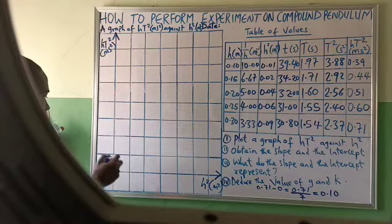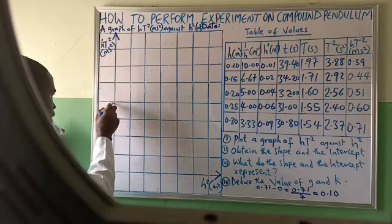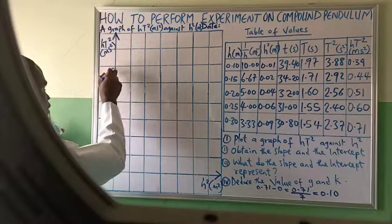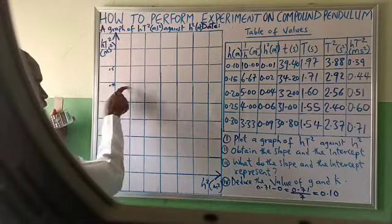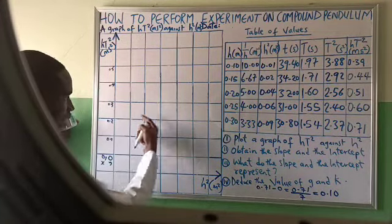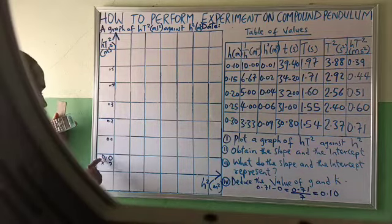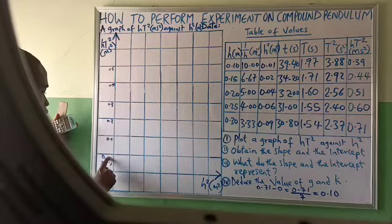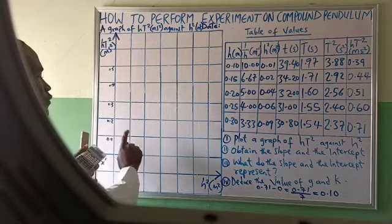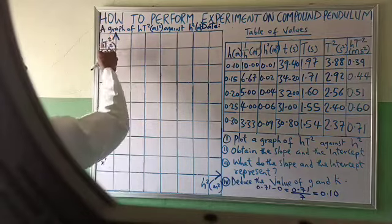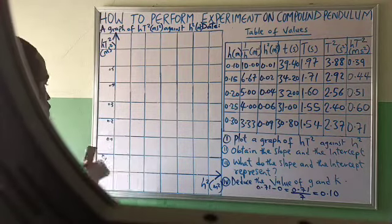If I label the vertical axis 0.1, 0.2, 0.3, 0.4, 0.5, I will see that 0.39 only appears around here — meaning the totality of the lower portion of the graph is vacant. That is a poor graph. Starting from the origin means the graph is not well balanced. Every good graph has to be balanced — covering at least two-thirds of the graph area both vertically and horizontally.